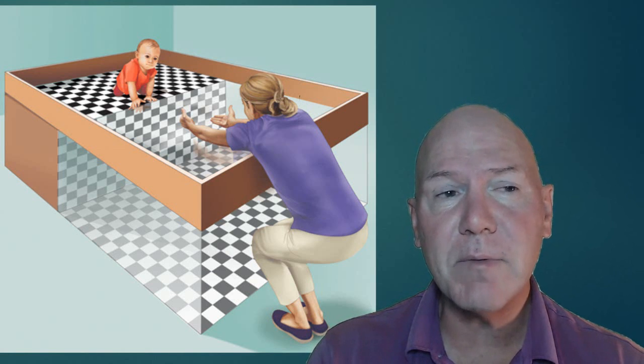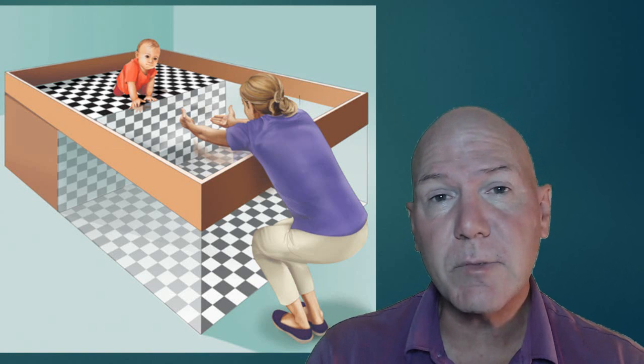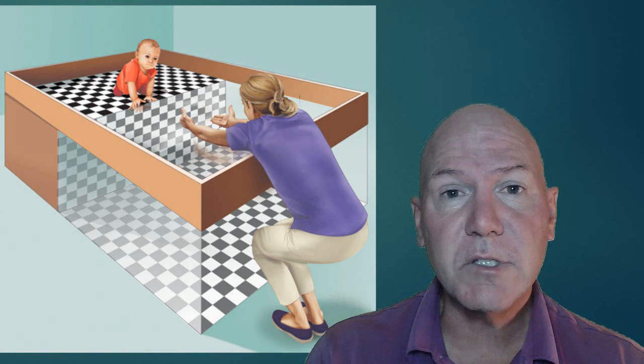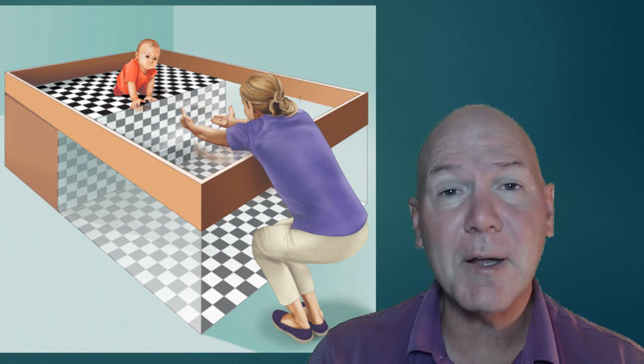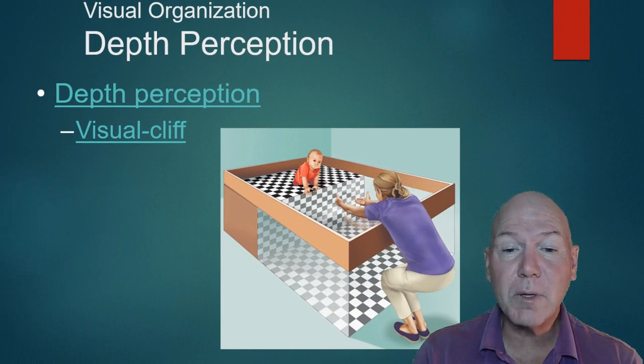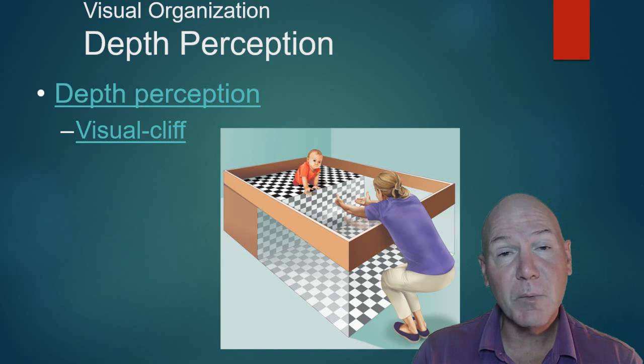They put a baby on one side and then mom would rattle a toy and call the baby over to the other side. We found that really new babies, three months, four months old, just when they very first learn to crawl, often up to six months, would not cross that visual cliff for anything.